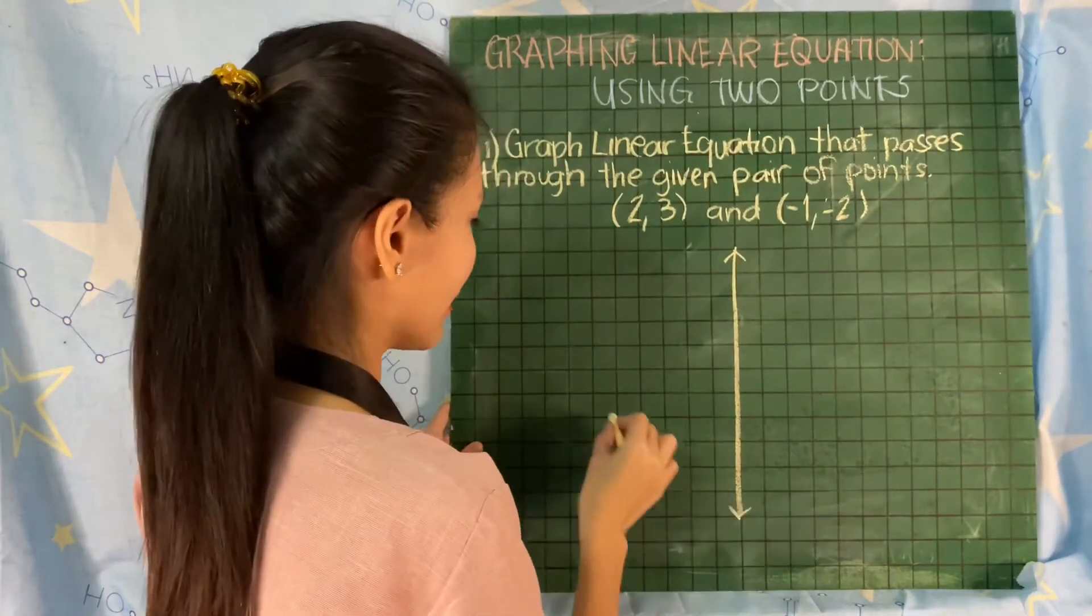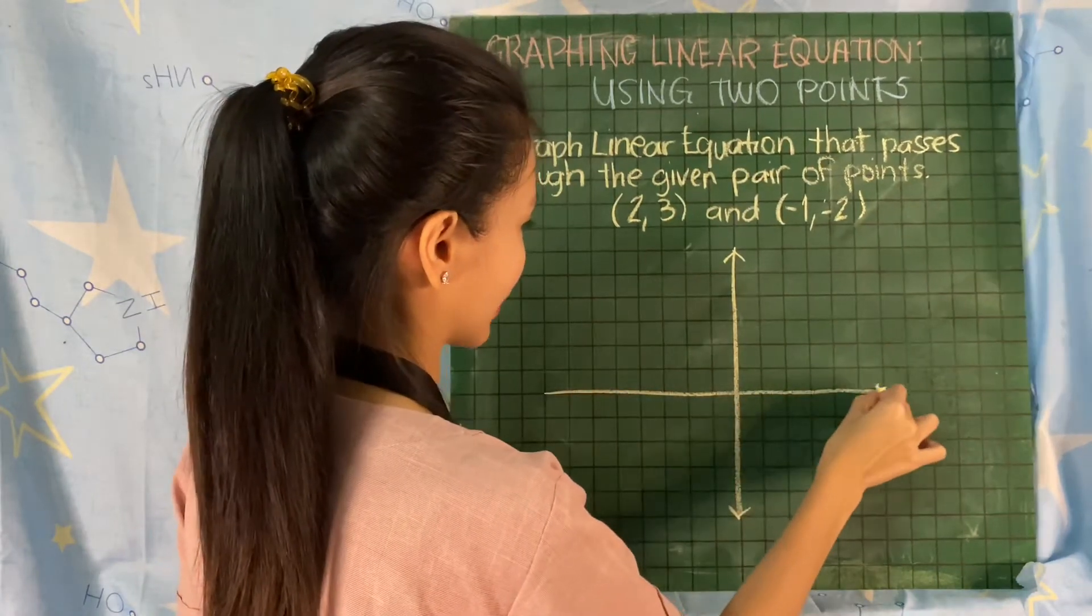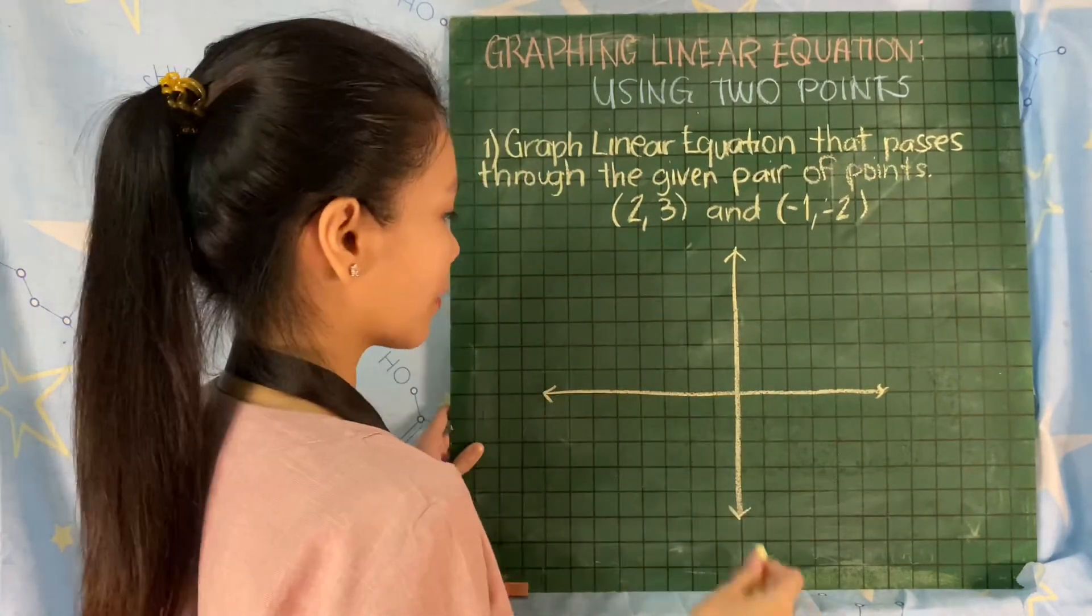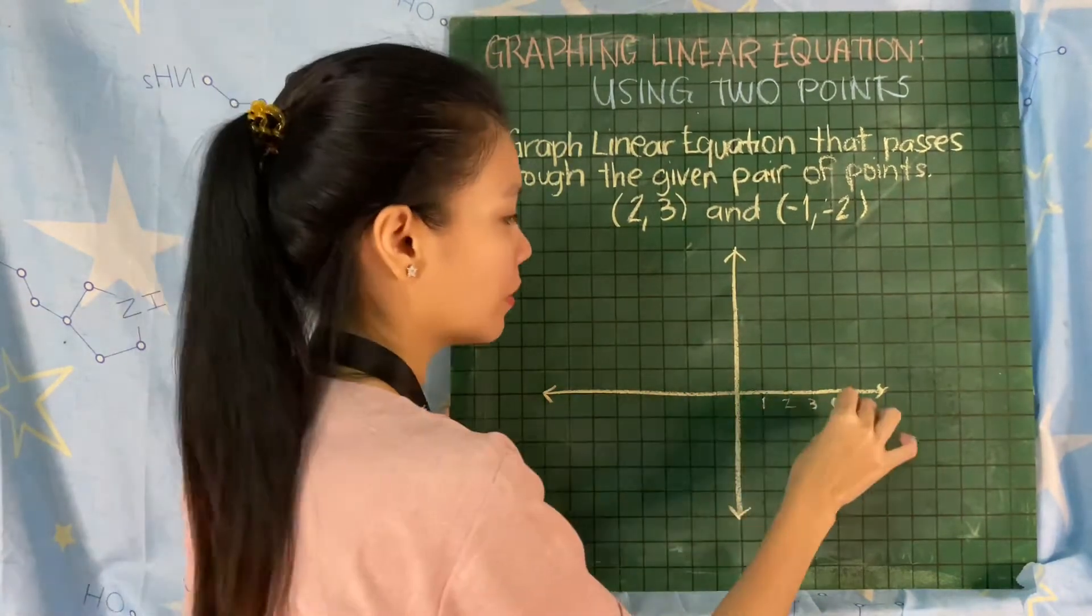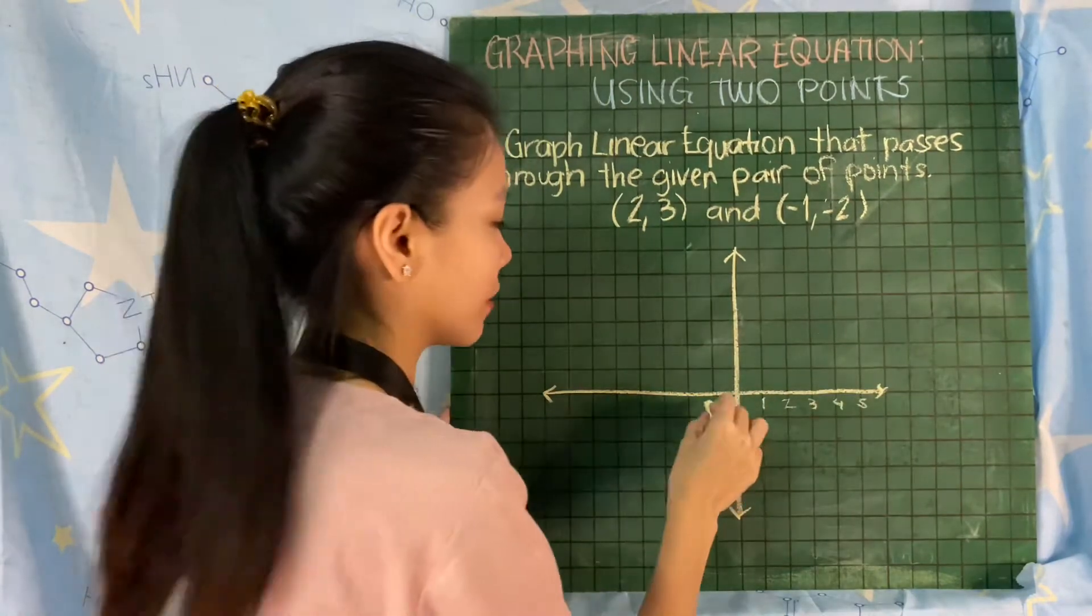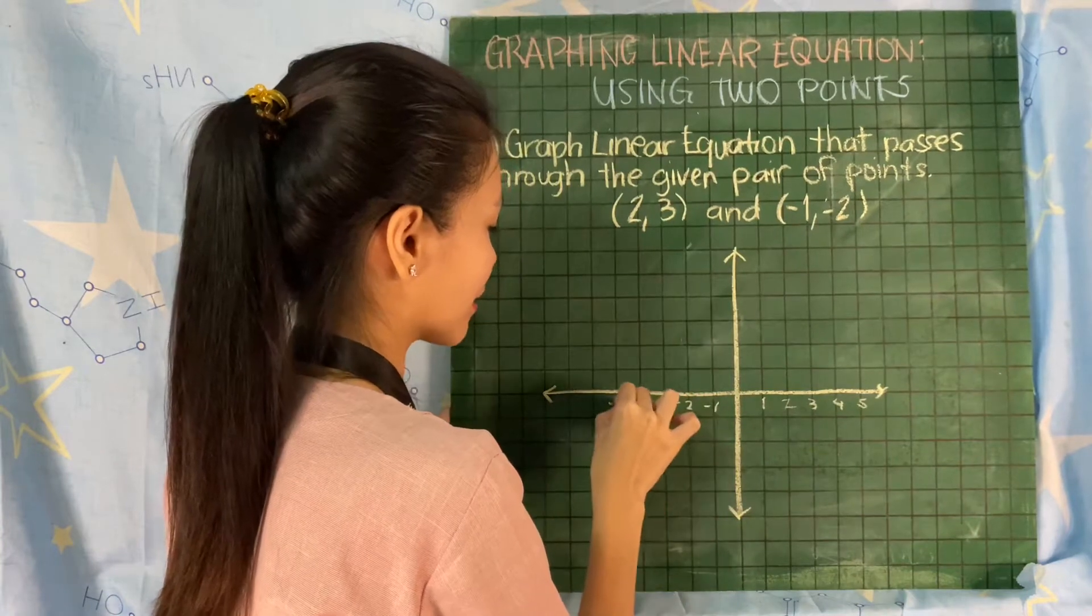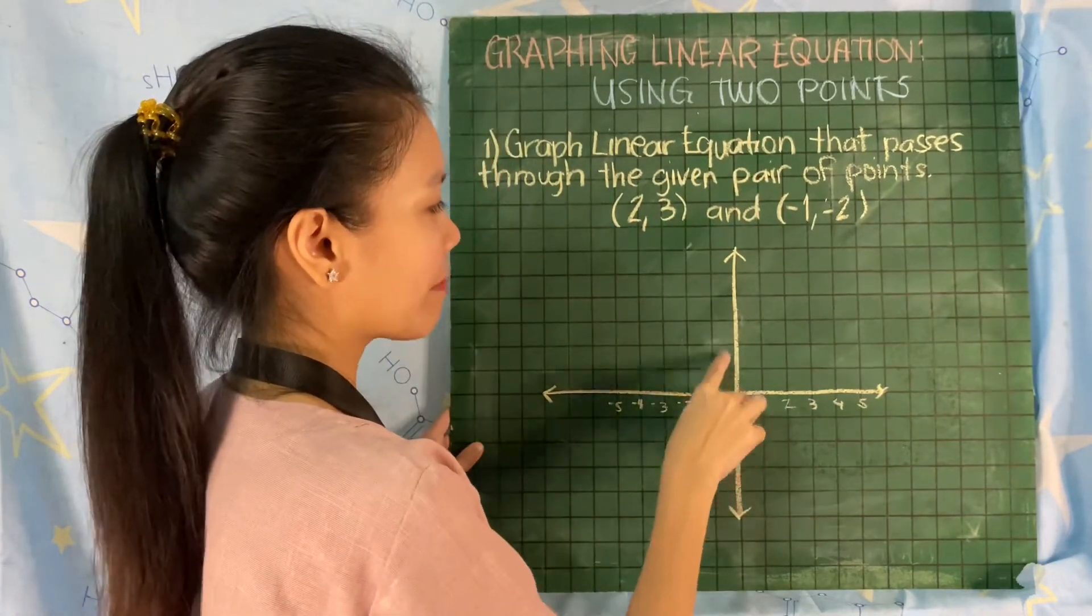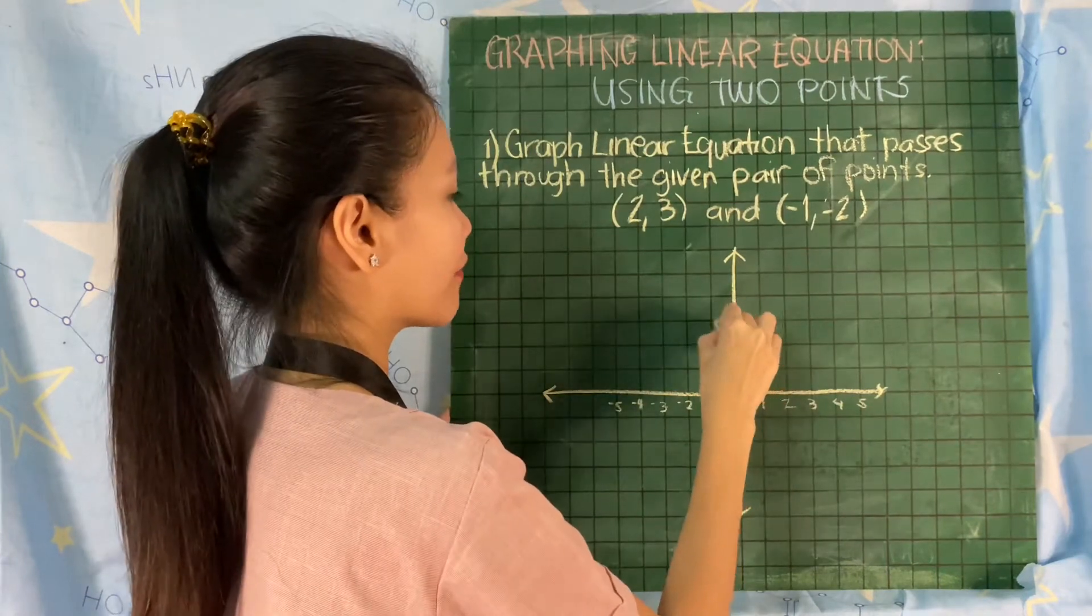One axis is vertical and the other one is horizontal. We have the positive numbers to the right of our origin, which is (0, 0), and negative numbers to the left of the origin. This is the x-axis. Then we have positive numbers upward or above the origin.